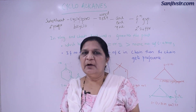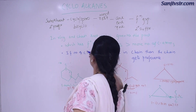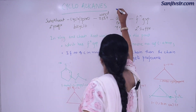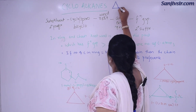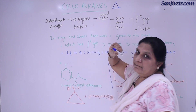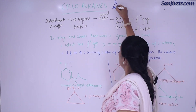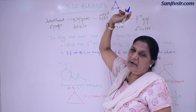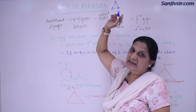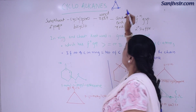So it will be cyclopropane, cyclobutane. In a cyclic structure, this will be called cyclopropane — every position has carbon, carbon, carbon: three carbon atoms, propane, cyclic molecule, so cyclopropane.